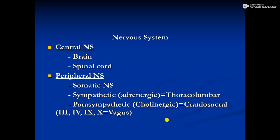First of all we need to know what is the nervous system. In general, the nervous system is of two types: central nervous system and peripheral nervous system. Central nervous system includes brain and spinal cord, while peripheral nervous system is again divided into two parts — somatic nervous system and autonomic nervous system. Autonomic nervous system is again divided into two main parts: cholinergic nervous system and adrenergic nervous system.